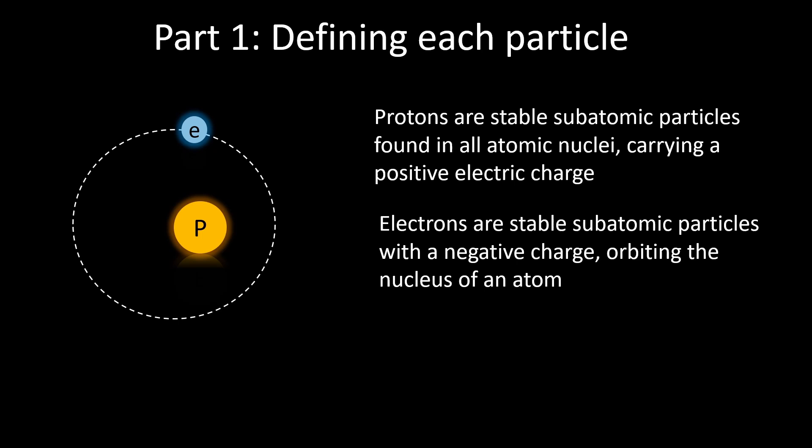Electrons are stable subatomic particles with a negative charge, orbiting the nucleus of an atom. They can be represented as blue dots.